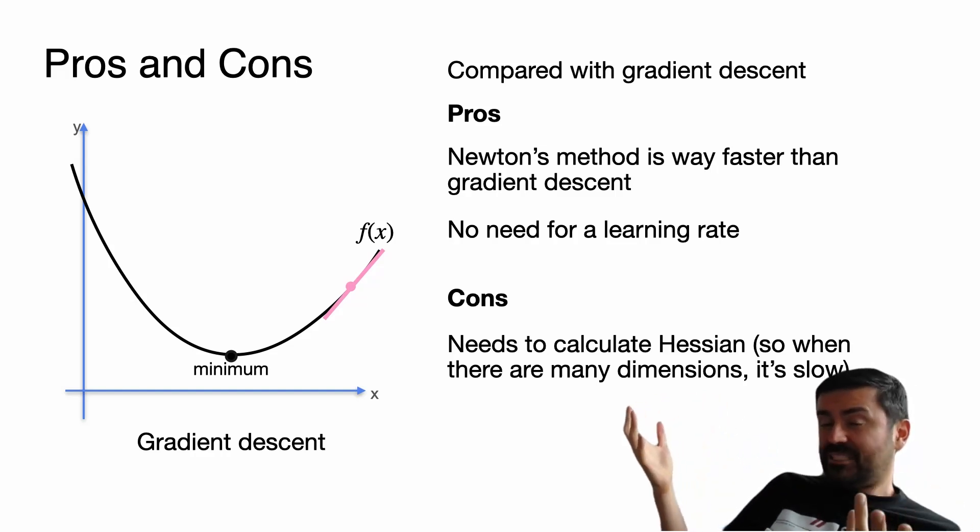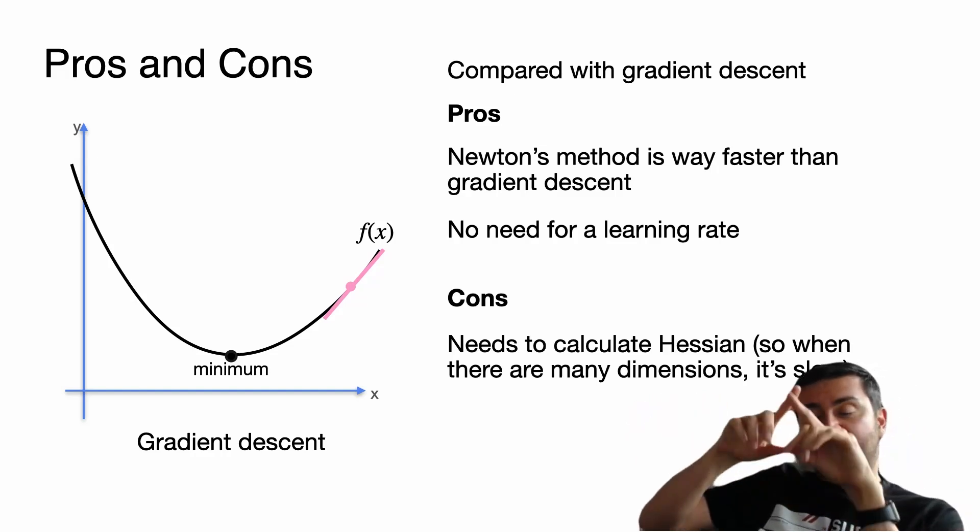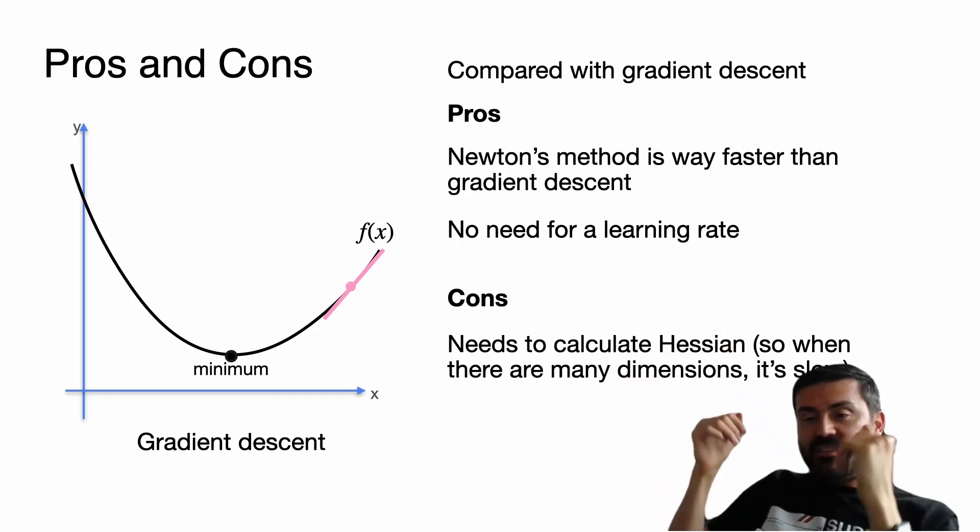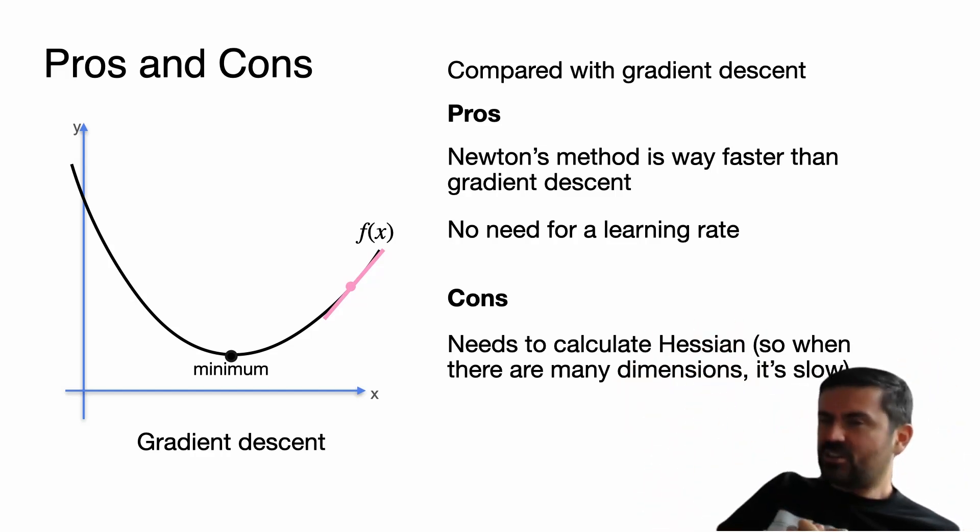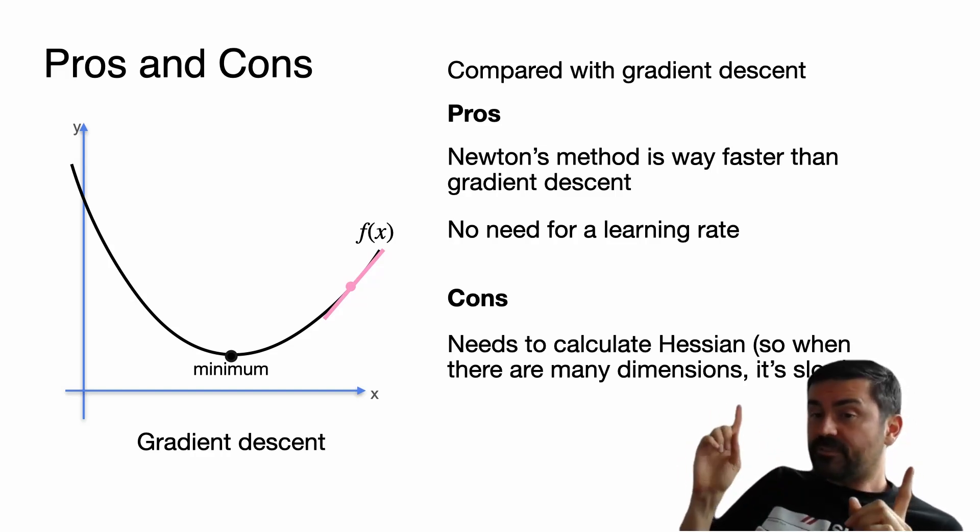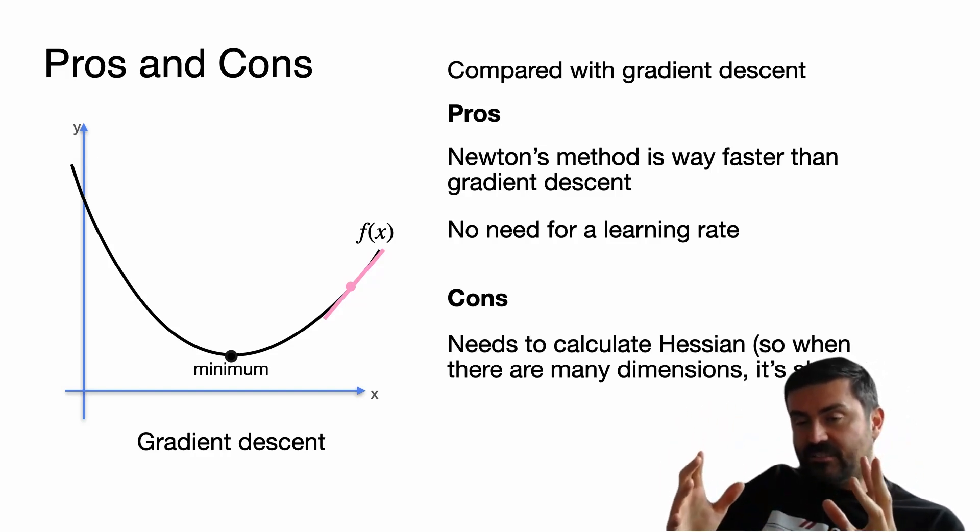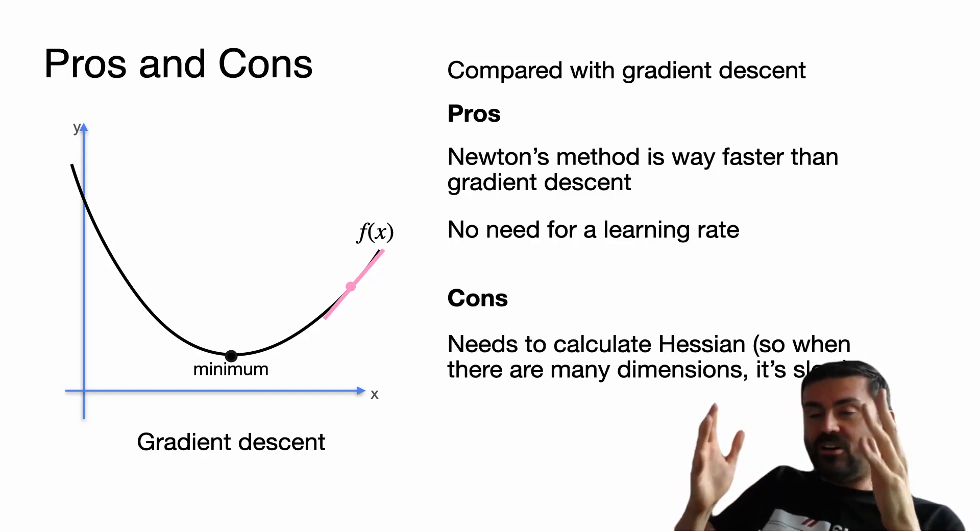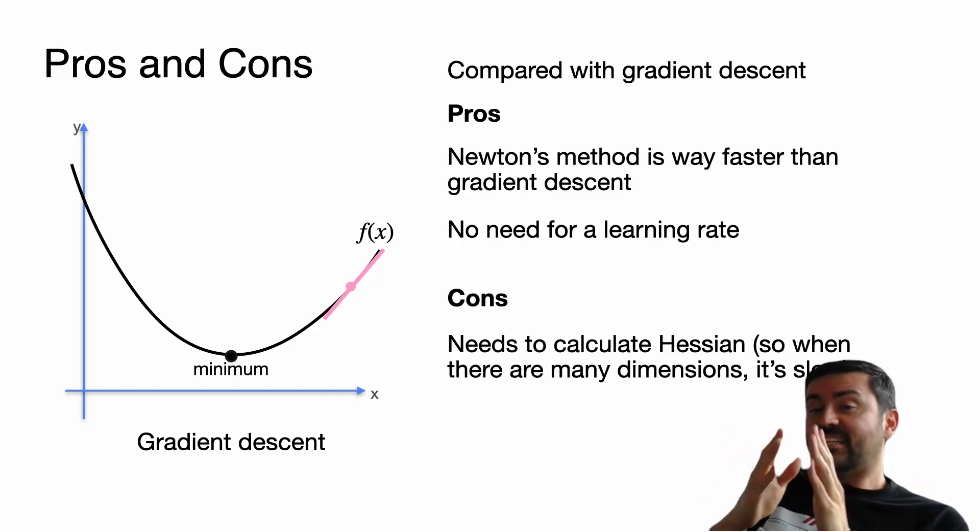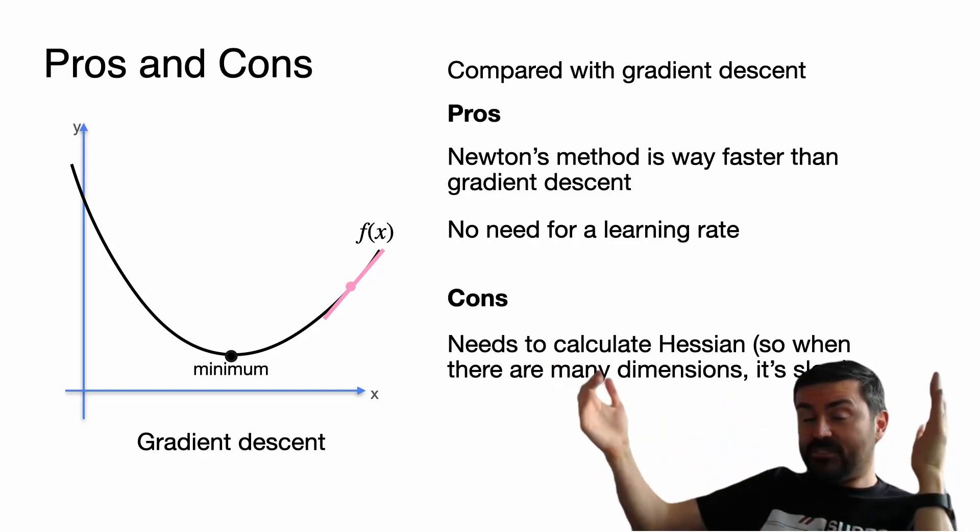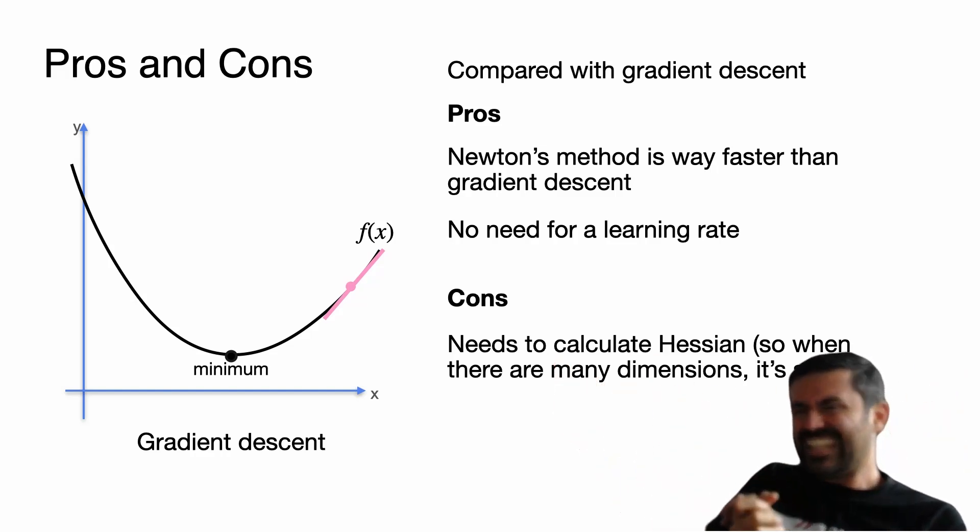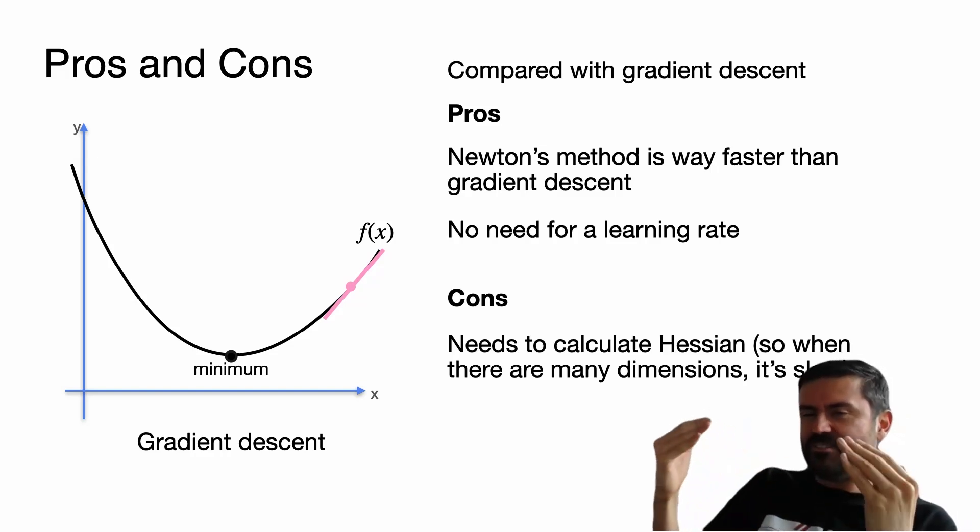And inverting a big matrix is very hard. So if you're in a thousand dimensions, you need to invert a thousand by thousand matrix. That takes a lot of time because inverting a matrix is slow. So the rule of thumb is: if you're working in a few dimensions like two or three - if your data set has two or three columns or maybe not too many columns - then Newton's method is fantastic. But if your data set has a thousand columns, that means you're working in a thousand dimensions. Then I would not go for Newton's method because that step of inverting the Hessian matrix is going to be really expensive. For that I would actually go with gradient descent - it's much faster.